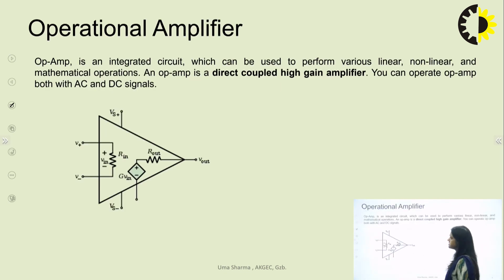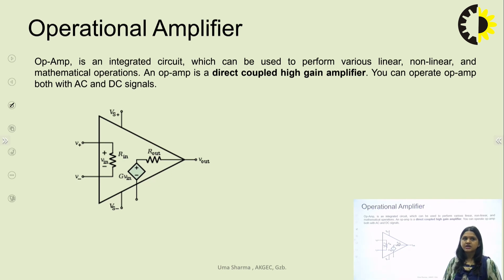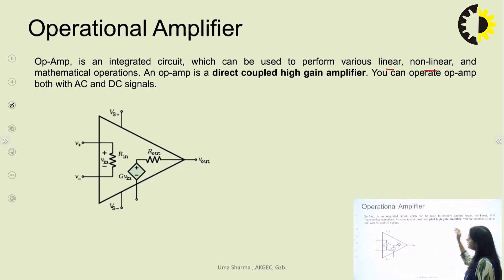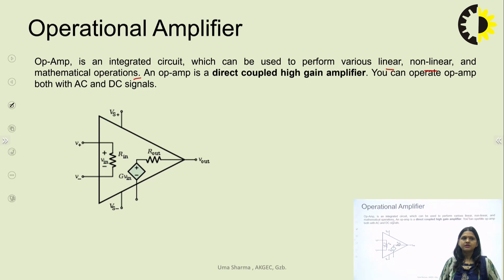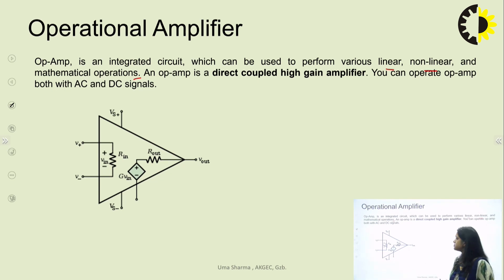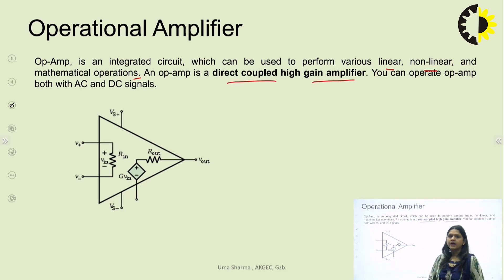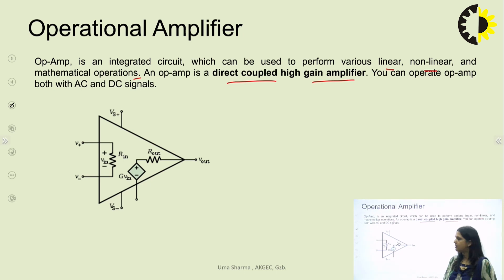Let us start with the introduction part. An Op-Amp is an integrated circuit which can be used to perform various linear, non-linear, and mathematical operations. Op-Amp has very high gain because we are designing amplifier circuits using it. It is a direct-coupled high-gain amplifier and can operate on both AC and DC signals.